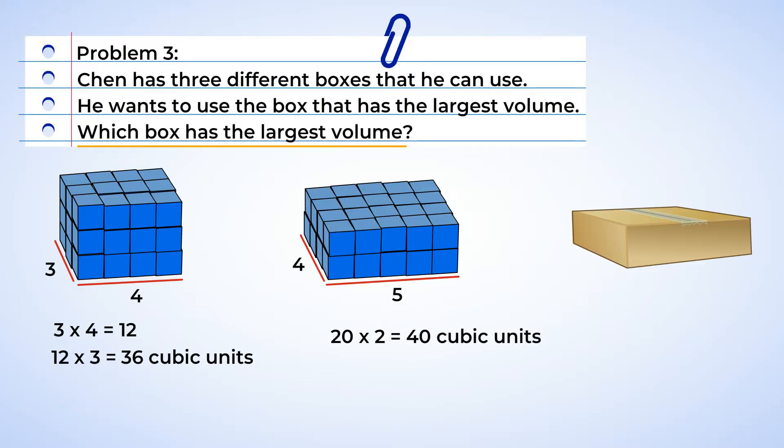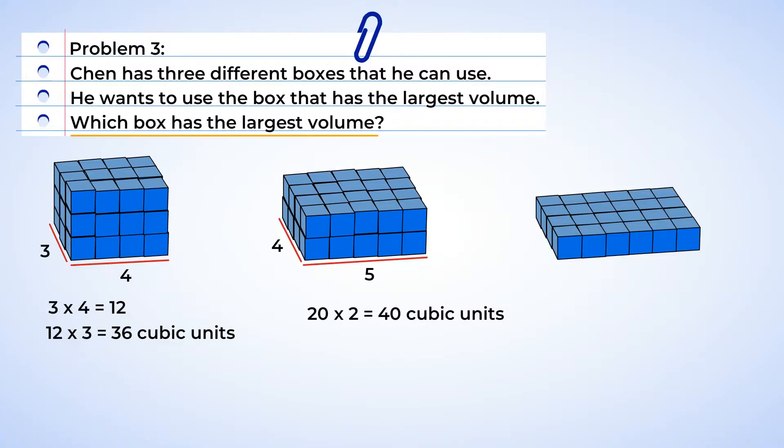Ah, let's check out the last one. Now, this box, ooh, has only one layer. That's 6 units by 4 units. Well, 6 multiplied by 4 is 24. Now, this box is only 24 cubic units. Yeah, that's the smallest one so far. Chen should use the second box to pack in as much stuff as possible.